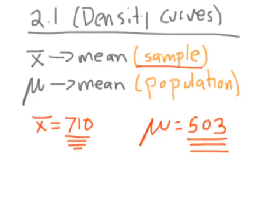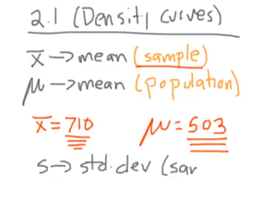So far we've been mostly using samples, which is why we've used x-bar. A similar thing happens with standard deviations. We've been using s for standard deviation, but from now on that's the standard deviation of a sample. We're going to use the Greek letter sigma when talking about the standard deviation of a population.